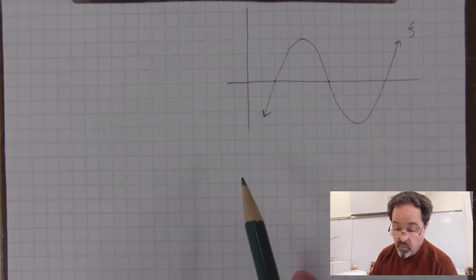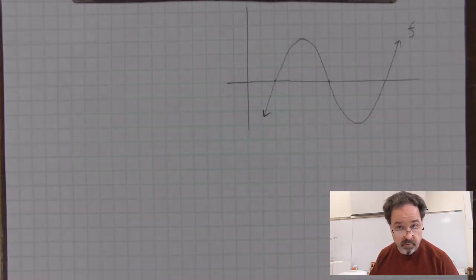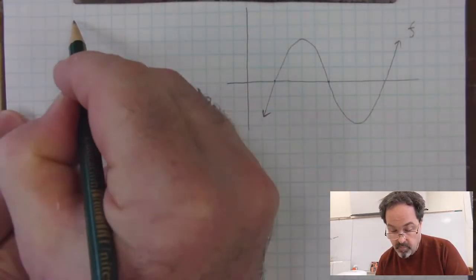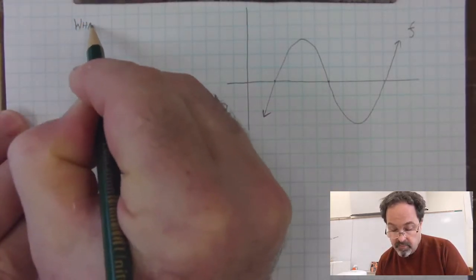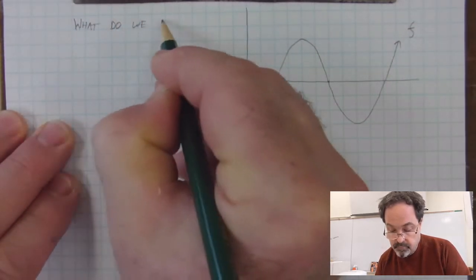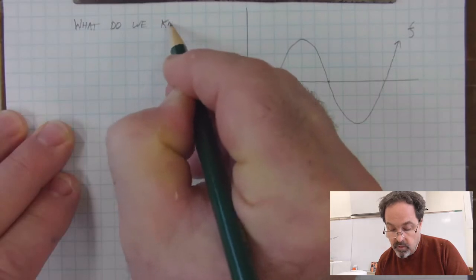There's a surprising number of things that we can justify simply from this graph. And since we'll be working from a graph, the things that we are going to say about this function are informal. In order to formally justify the attributes that this function has, we would need its expression and prove things algebraically. But what can we say from having this? What do we know? Quite a number of things.